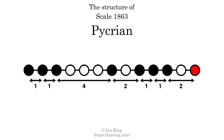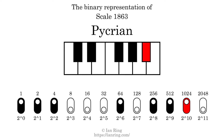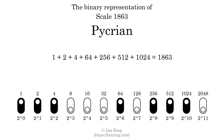The binary representation of this scale is determined by mapping tones of the scale to binary digits. Each binary digit represents a power of 2. To get the scale number, we add the powers of 2 together. The powers of 2 that are present in the scale, all added together, equals 1,863.